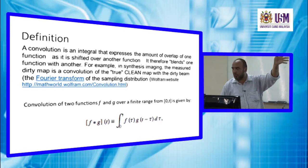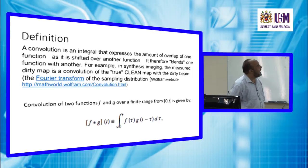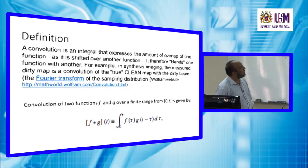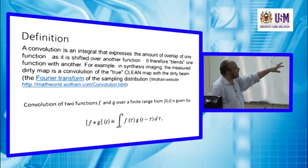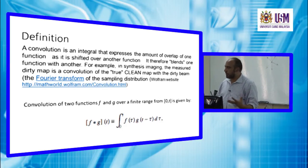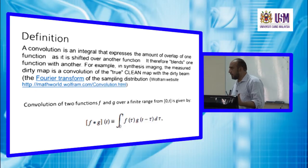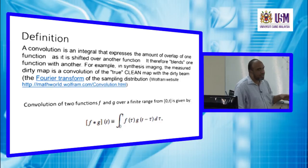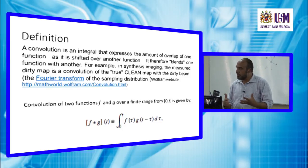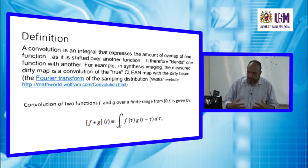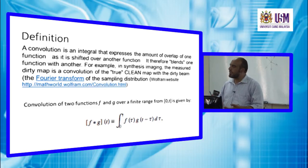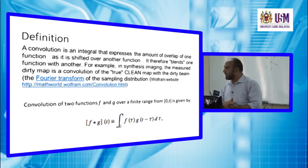Convolution blends one function with another — like kiwi, apple, and strawberry. In imaging, the measured dirty map that we observe is a result of the convolution of the true clean map with the dirty beam or noise introduced by the effects of the imaging beam.